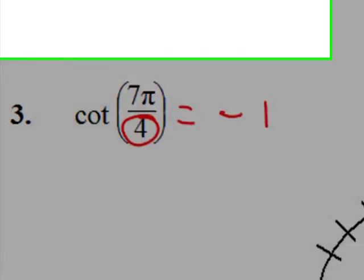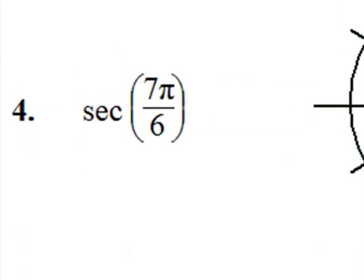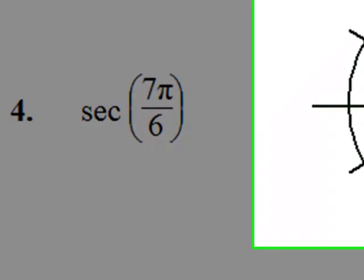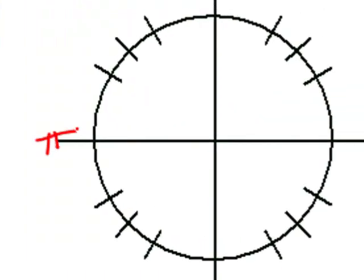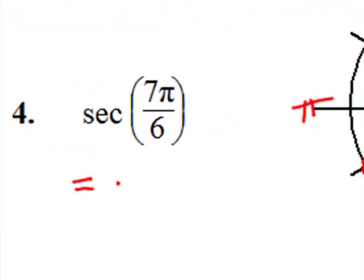The secant of seven pi over six. Well, seven six pi is a little bit more than one pi. In fact, it's right here.